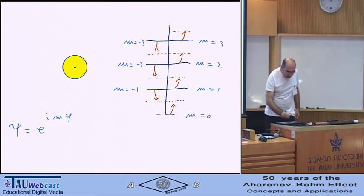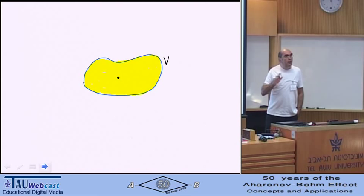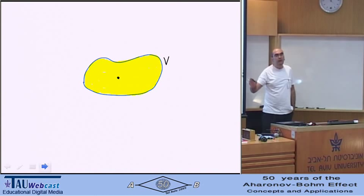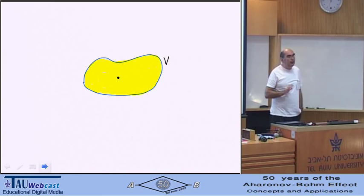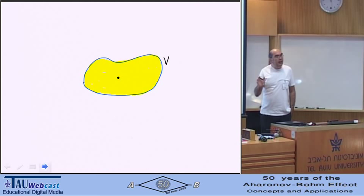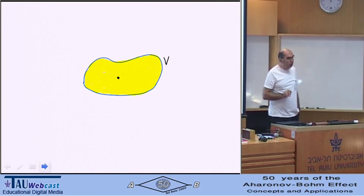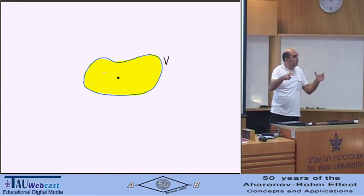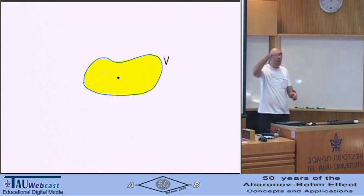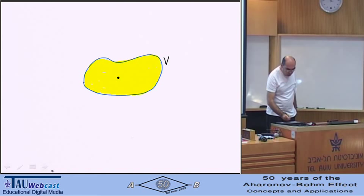is that imagine any potential that you want, no symmetry whatsoever. Yakir's argument is that there must be the case that for this most general potential, there exists one point, well, or an odd number of points, that if I would put half a flux on there, I would produce degeneracy. Okay? How does that work?